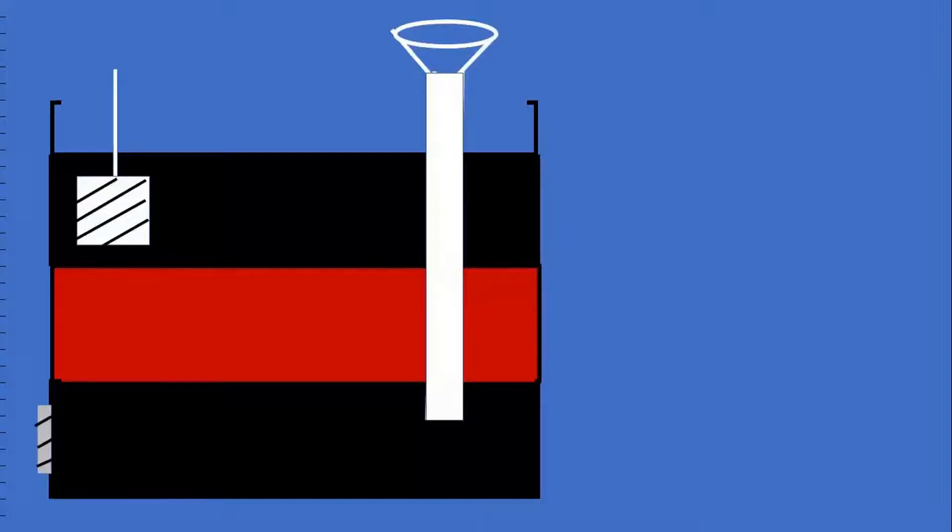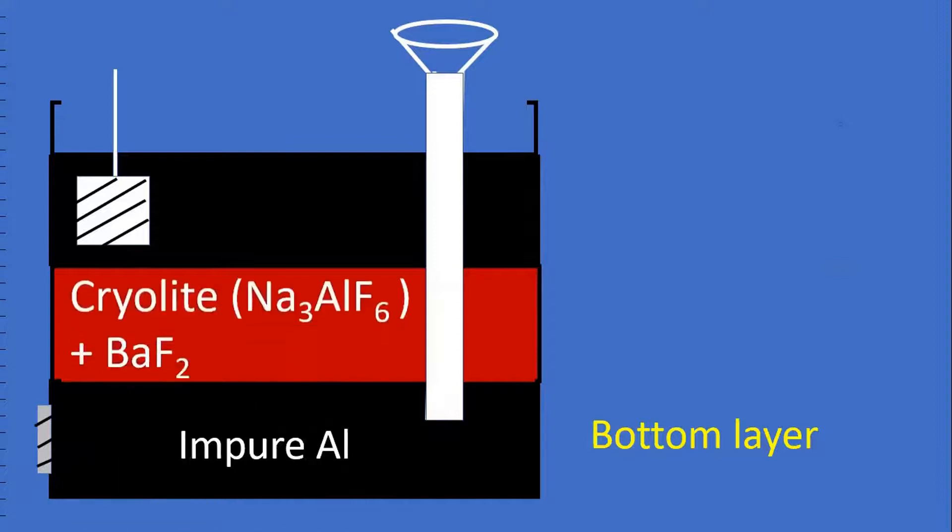This is the vessel. The bottom layer consists of impure aluminum metal, which is in molten stage. A mixture of cryolite and barium fluoride is taken as middle layer.